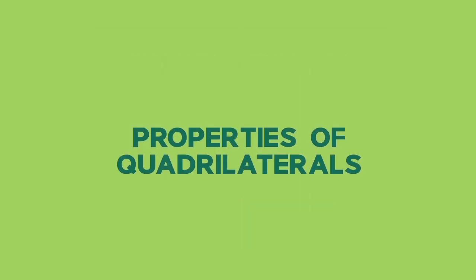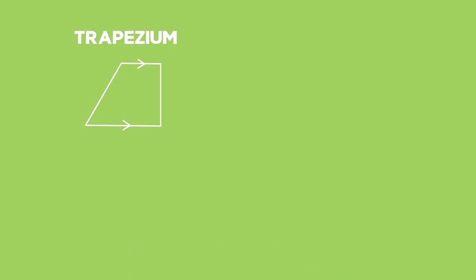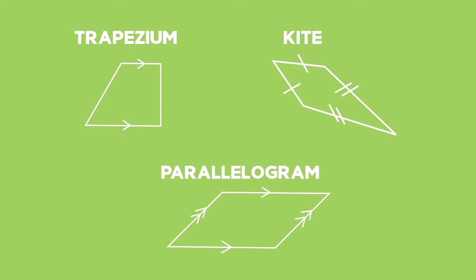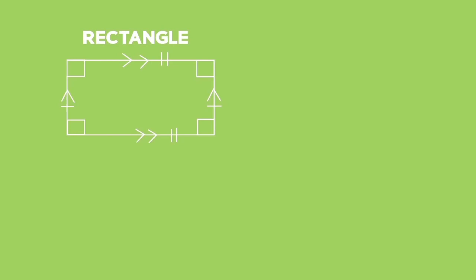Properties of quadrilaterals. Trapezium. Kite. Parallelogram. Rectangle. Square.